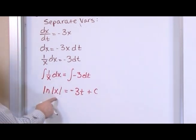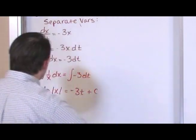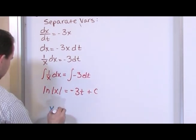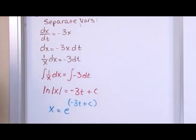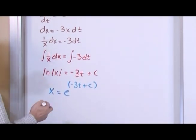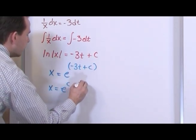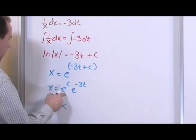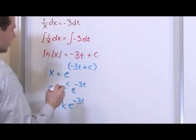We're getting very close. Now we want to solve for x, because that's the solution to this homogeneous equation. What we're going to do is raise both sides to the power of e — exactly what we did last time. Once we raise the left side to e, we're just going to have x, because they annihilate each other. On the right-hand side, we'll have e raised to the power of negative 3t plus the constant. It's better to write this as e to the power of the constant multiplied by e to the minus 3t. We'll relabel e to the constant as k, so x equals k times e to the minus 3t.